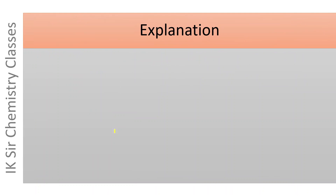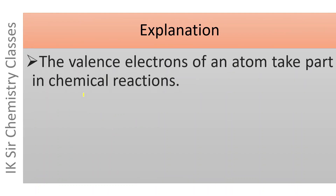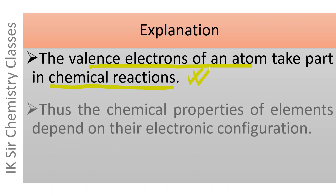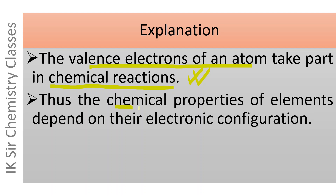Explanation for magic numbers. It is a well-known fact that the valence electrons of an atom take part in chemical reactions. Thus, the chemical properties of elements depend on their electronic configuration.